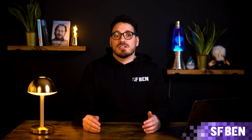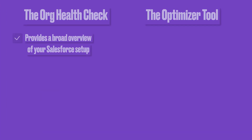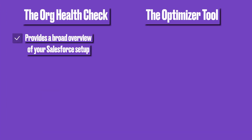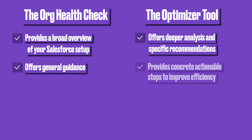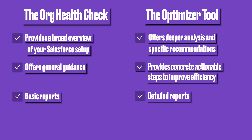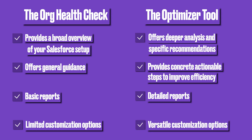In essence, the Salesforce Optimizer serves as a guide to help you fine-tune your Salesforce instance for optimal performance and effectiveness. Although the Salesforce org health check and Salesforce Optimizer are similar tools, there are some key differences. The org health check provides a broad overview of your Salesforce setup, while the Optimizer offers deeper analysis and specific recommendations. The org health check provides general guidance, whereas the Optimizer provides concrete, actionable steps to improve efficiency. In terms of reporting, the org health check is basic, whereas the Optimizer offers detailed reports with customizable filters and historical data. Additionally, the Optimizer allows tailoring recommendations to your org's specific needs, making it a more versatile tool.